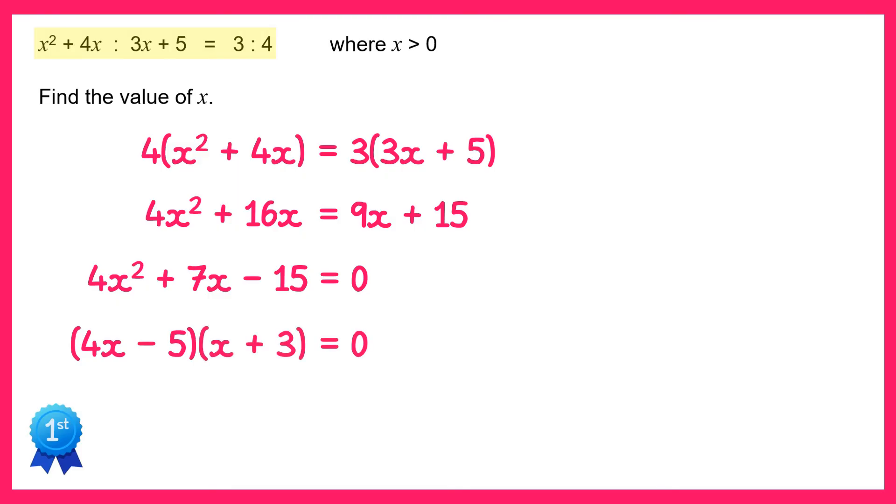We get two solutions from this, so either 4x minus 5 equals 0 which gives you x equals 1.25 or 5 over 4, and the other bracket is x plus 3 equals 0 which gives x equals negative 3. But we were told in the question that x is greater than 0, so we only want one of those solutions. So the answer to the question is x equals 1.25.